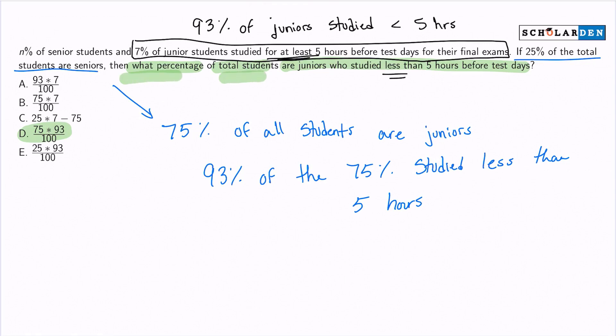What percentage of the total students are juniors who studied less than five hours? We know that of all the students, 75 percent are juniors, and 93 percent of that 75 percent studied less than five hours. So there we go. All we have to do is compute this mathematical statement.